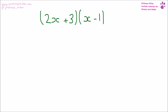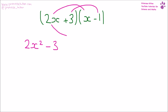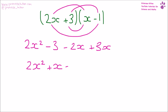This one: 2x squared minus 3, then minus 2x plus 3x, giving us 2x squared plus x minus 3.